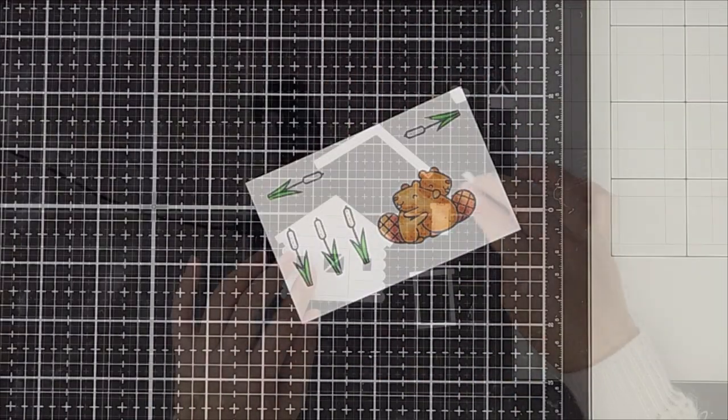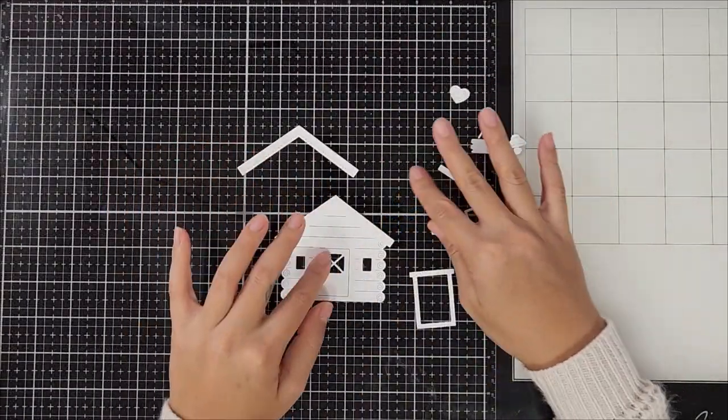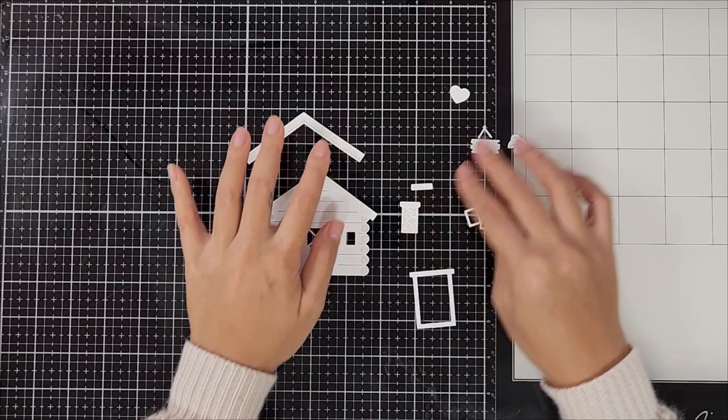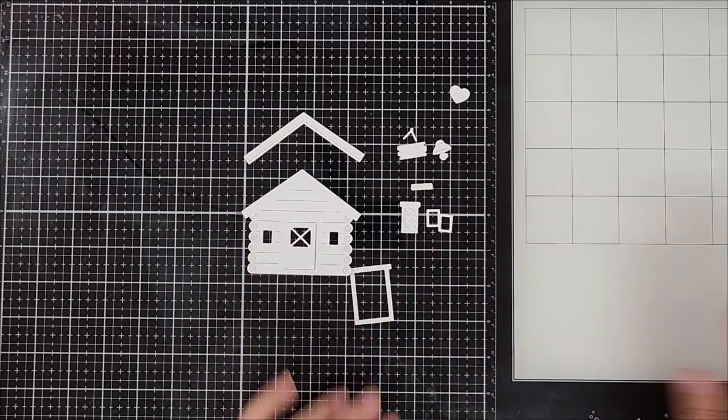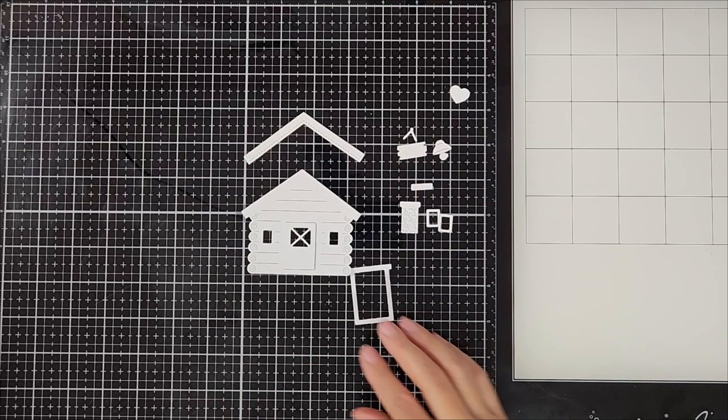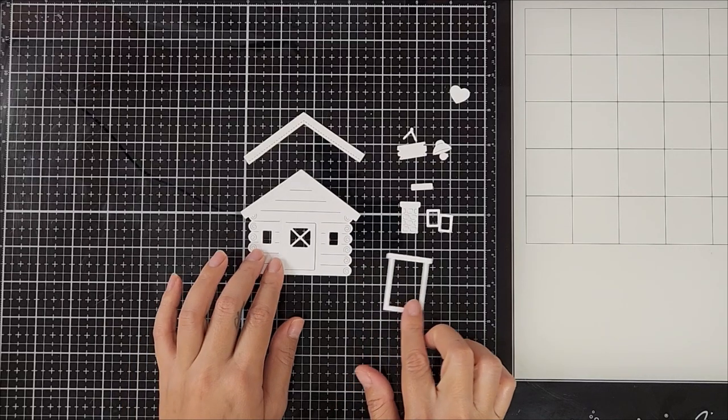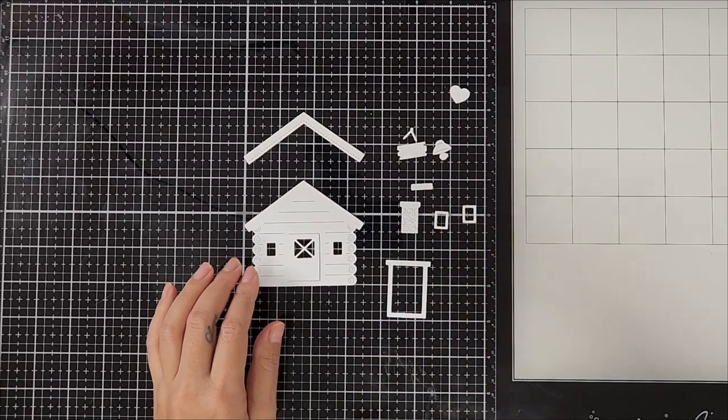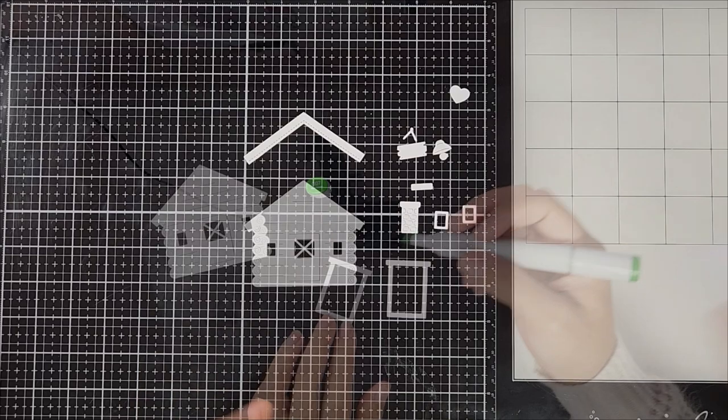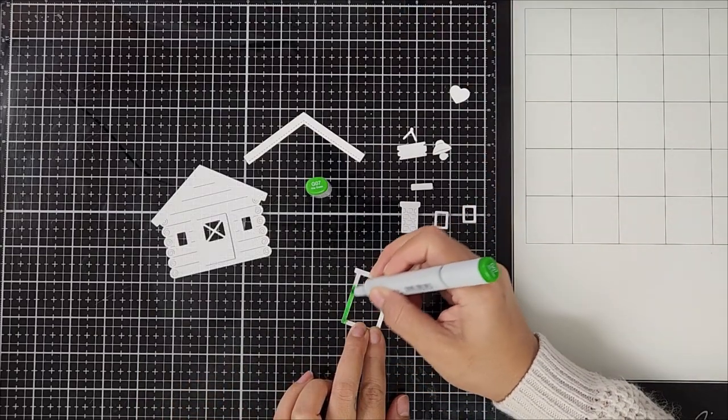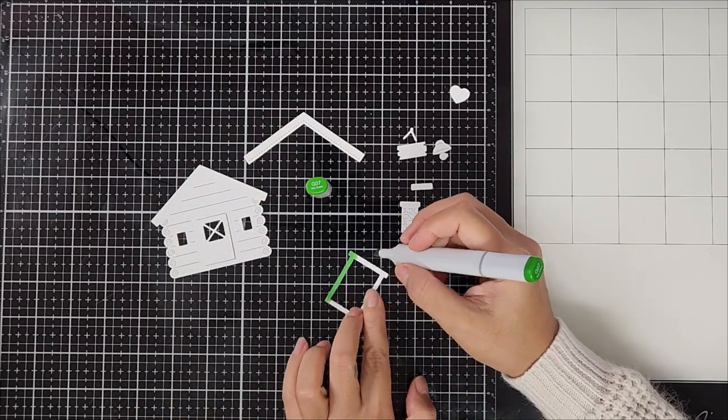Okay, so off screen I went ahead and die cut the Build a Cabin set out of white card stock. You can definitely cut this out individually with different colored card stocks, but I decided that I wanted to color it in. I know I like to color everything in, so I thought that was the perfect choice.